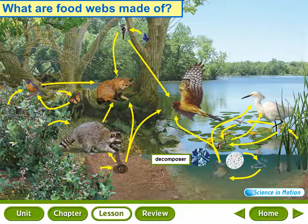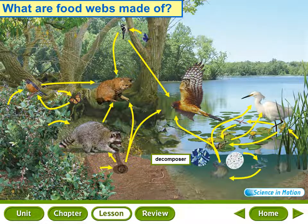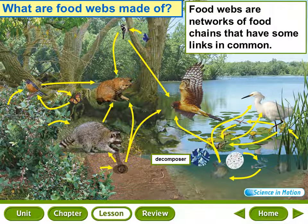What are food webs made of? In most food chains, a single organism is not eaten by only one consumer. For example, a mouse may be eaten by a bobcat or a hawk. This makes the mouse a part of two separate food chains. These chains can be combined to form an even bigger food web. A food web is a network of food chains that have some links in common. Arrows represent the energy flow from one organism to another — arrows pointing to an organism show what that organism eats.